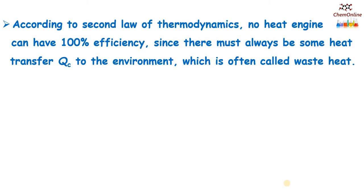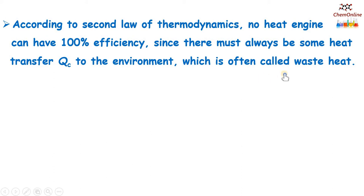In order to overcome the limitations of the first law, there came another law called the second law of thermodynamics. According to the second law of thermodynamics, no heat engine can have 100% efficiency because there must always be some heat transfer to the environment, which is often called waste heat.